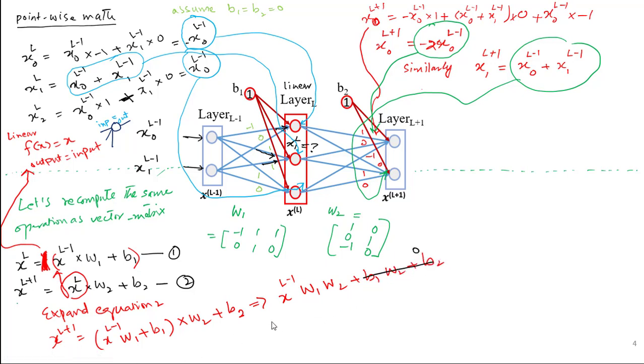We get X from the layer L minus 1 times W1 times W2. And the second and third terms due to assumption of b1 and b2 being 0 results in 0. What does it mean? The activation at layer L plus 1 is equivalent to the activation at layer L minus 1 times W1 times W2. We can see that the activation at L plus 1 is not dependent on layer L according to this equation. So if we expand this, it is X0 L minus 1 and X1 L minus 1 times W1 and W2. We reproduce the matrices over here.